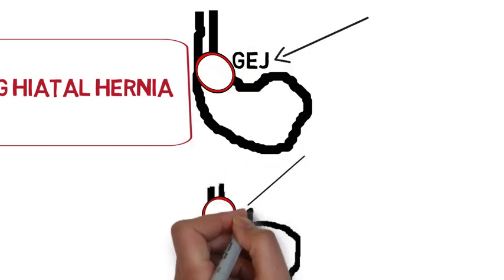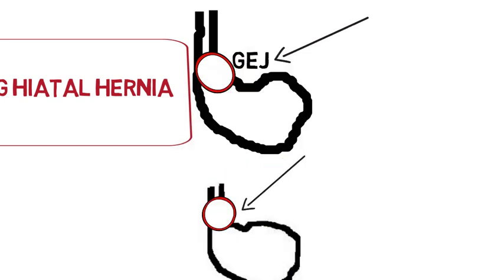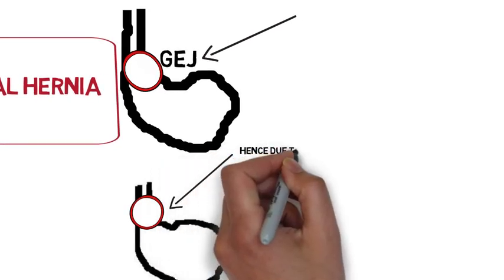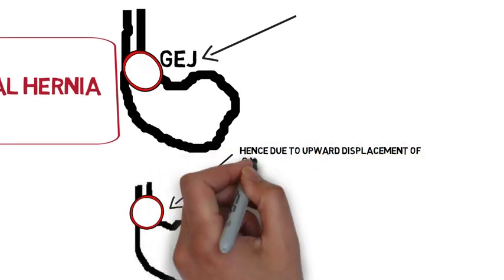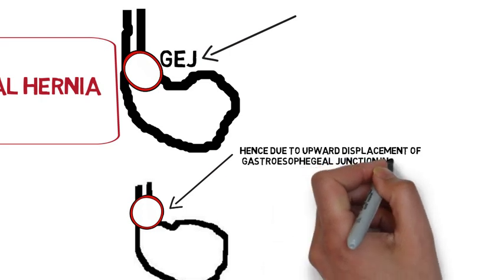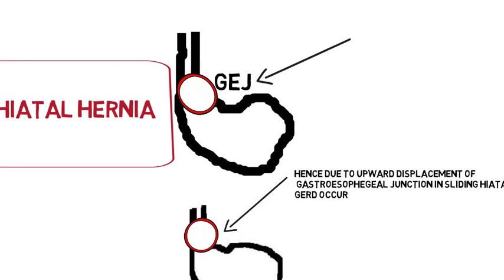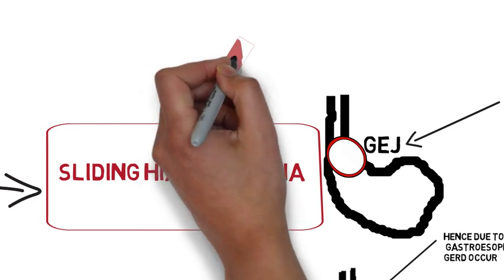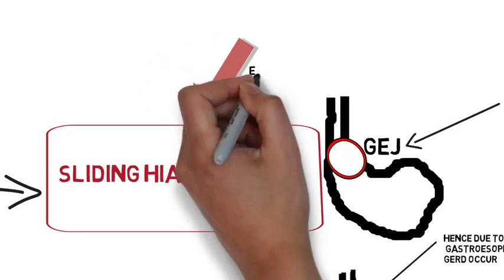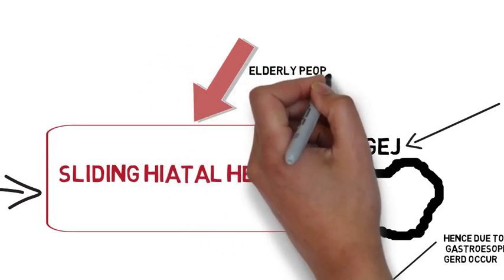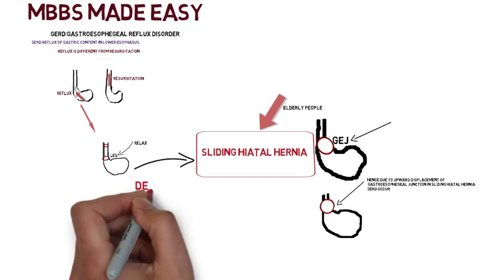Now let's compare. In this diagram the gastroesophageal junction is down, but in this diagram the gastroesophageal junction is up. Hence, due to the upward displacement of gastroesophageal junction in sliding hiatal hernia, GERD occurs. Sliding hiatal hernia is mainly seen in elderly people.